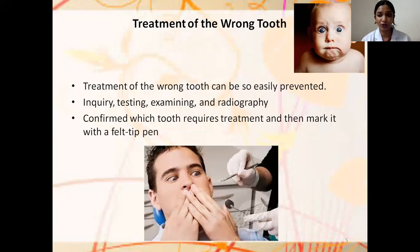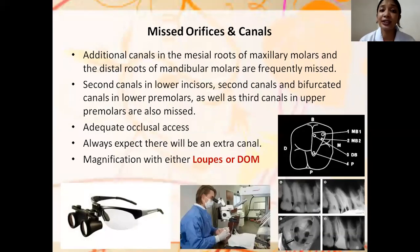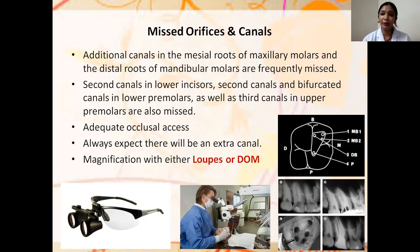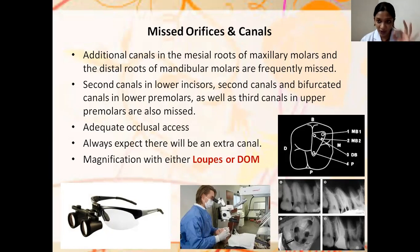Missed orifices — additional canals in the mesial root of maxillary molars and distal root of mandibular molars — are frequently missed. We need to know proper anatomy and the dental map, knowing where canals lie. Second canals in lower incisors, bifurcated canals in premolars, and canals in third molars and upper premolars are also often missed. Always ensure adequate occlusal access for straight-line access, and always expect an extra canal — for example, the distal root of a mandibular molar could have a round or overly large canal, two separate canals, or a mid-mesial canal between the mesial roots.